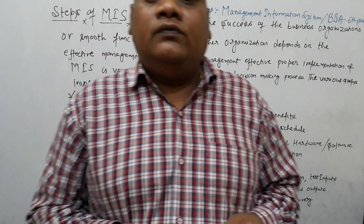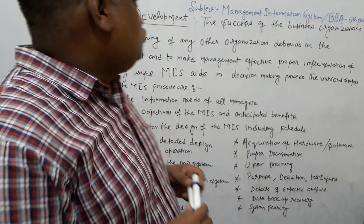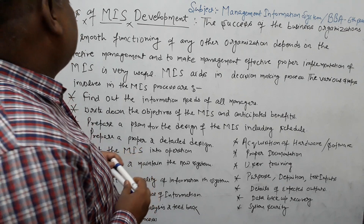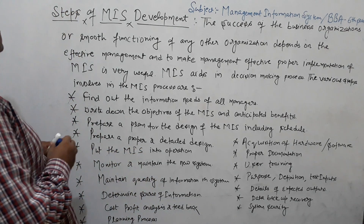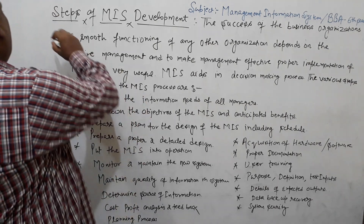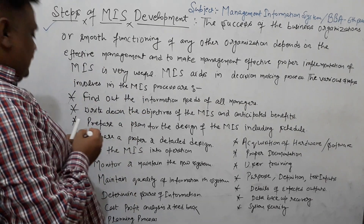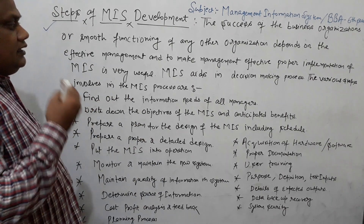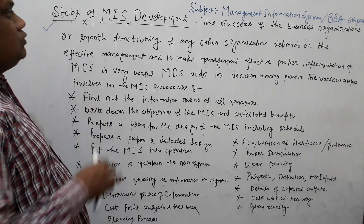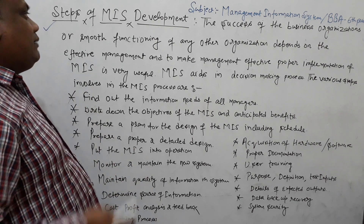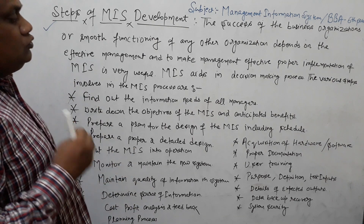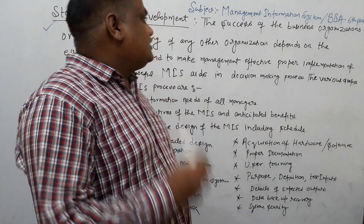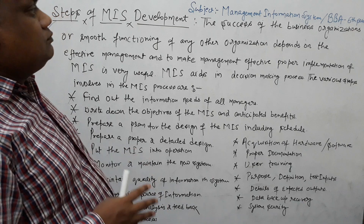Hello students, I hope all of you are very fine. Today our subject is Management Information System for BB sixth semester, and today our most important topic is the steps of MIS development. We will look at what steps are necessary when a company develops a Management Information System.